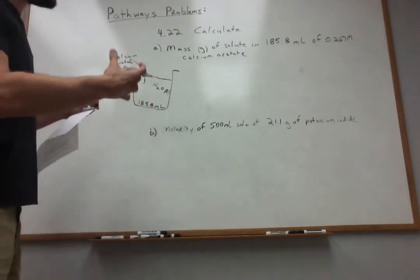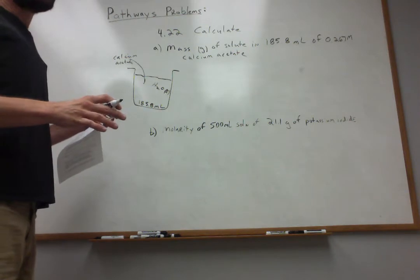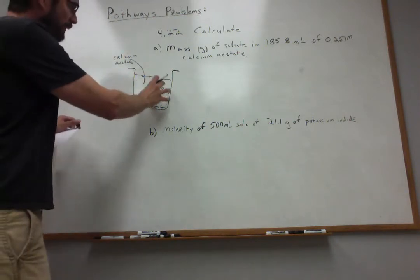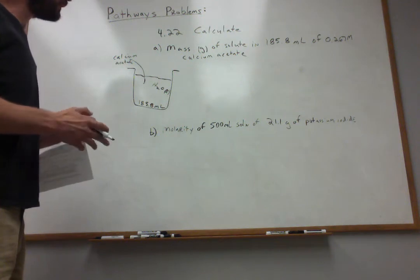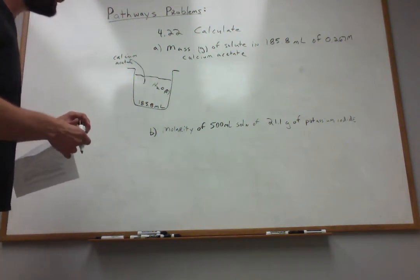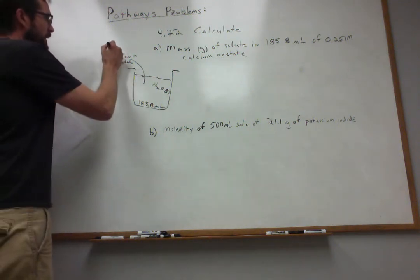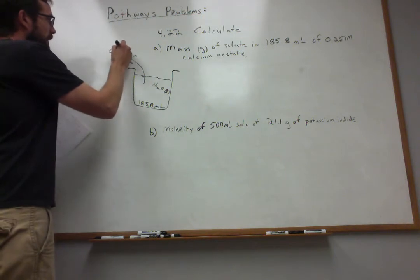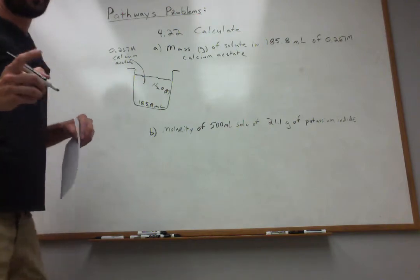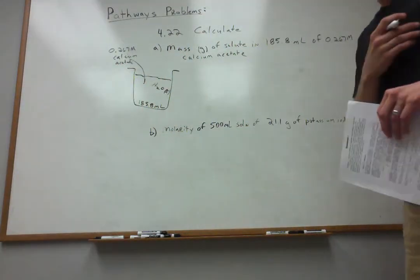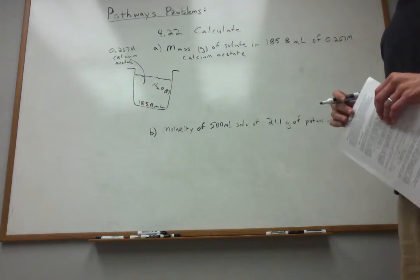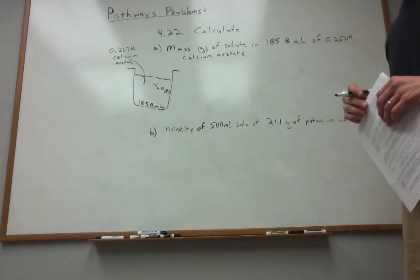The calcium acetate is soluble, acetates are soluble, it dissolves up. And those ions then float around that beaker to make a solution. This is what our visual is. Now, we know that the concentration of the calcium acetate is 0.267 molar. Molarity is one of our concentration units we've introduced this chapter. That's why I'm working this problem, so you can get a feel for what molarity is all about and how to use it.